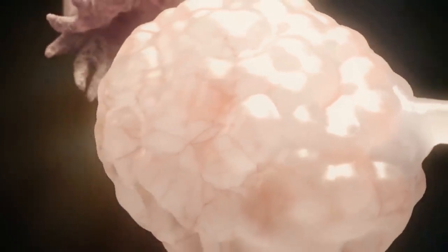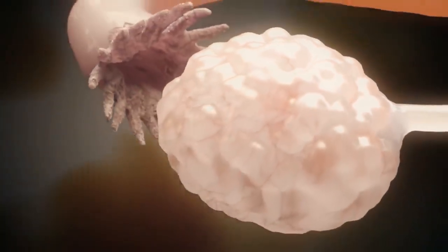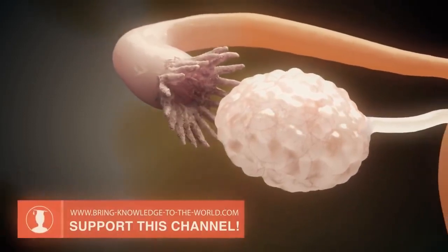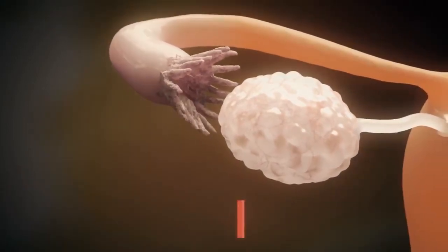The dominant follicle grows to about two centimeters and the fimbriated end of the fallopian tube, which eventually catches the egg, moves to the site of ovulation.